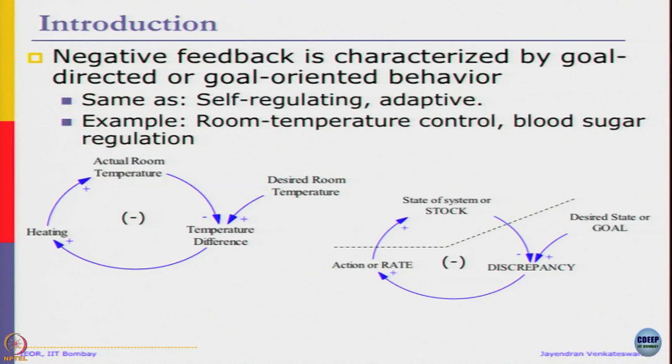We know that the state of system can be represented as a stock. Desired behavior is defined as a goal of system, and discrepancy is used to affect the rate, which then in turn affects the stock of the system. This is a general causal diagram of a simple negative feedback system.